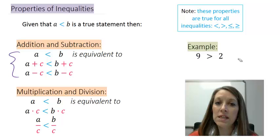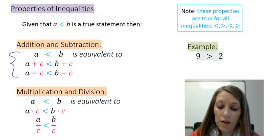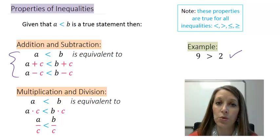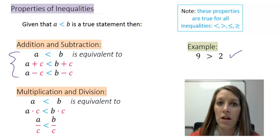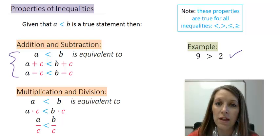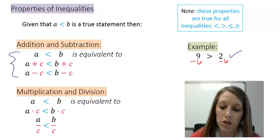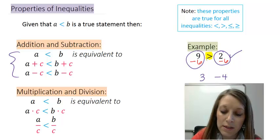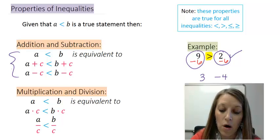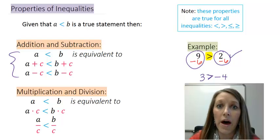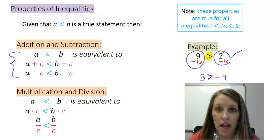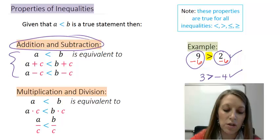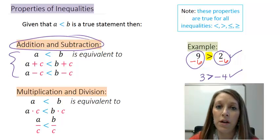Let me prove this using an example. We have a true inequality to start: 9 is greater than 2. Let's subtract 6 from both sides. On the left, 9 minus 6 gives me 3. On the right, 2 minus 6 gives me negative 4. By the property of inequality, the inequality sign should remain the same. And indeed, 3 is still greater than negative 4. So with the addition or subtraction property, it does not matter whether it's equals or inequalities — it all works out the same.